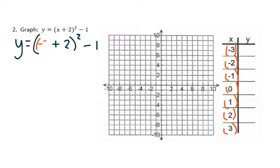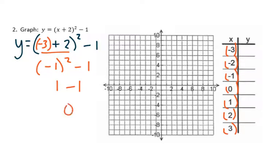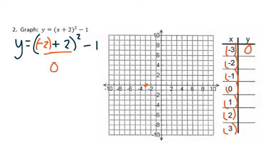The first thing we do is take negative 3 and insert it in. We evaluate the inside, which gives us negative 1, and we square that. Negative 1 squared becomes 1, and 1 minus 1 becomes 0. So our first point is going to be at negative 3, 0. Then, taking negative 2: negative 2 plus 2 makes 0. 0 squared is still 0, so 0 minus 1 is negative 1. So negative 2, negative 1 is the next coordinate.